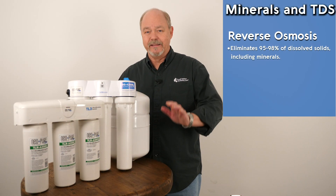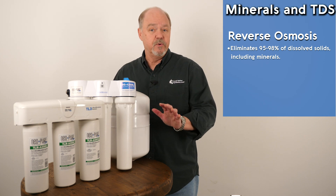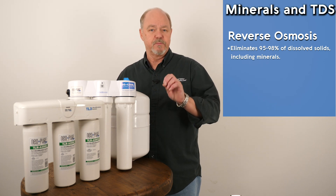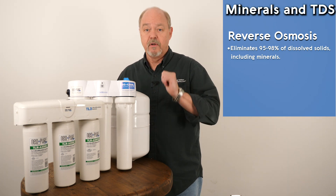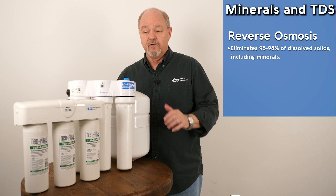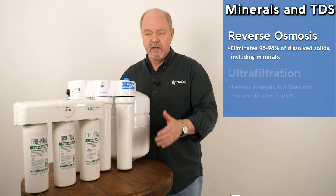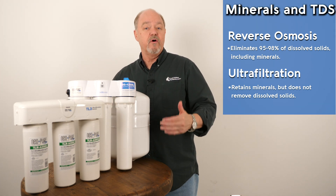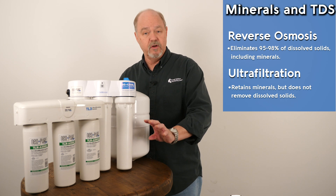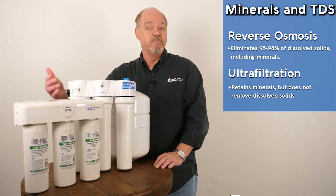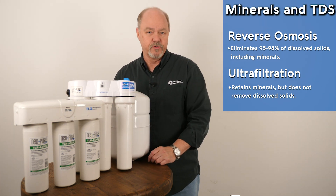Reverse osmosis eliminates the majority of dissolved minerals. A lot of people like that because they want their drinking water as pure and free as possible from minerals, chemicals, or what have you. So the RO system has the advantage there. Ultrafiltration is not going to eliminate dissolved solids — it's only going to deal with solids. For folks that like minerals left in the water, the advantage is ultrafiltration.